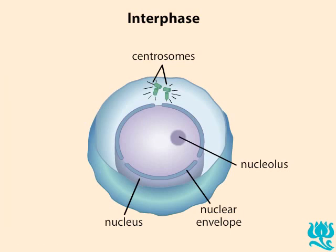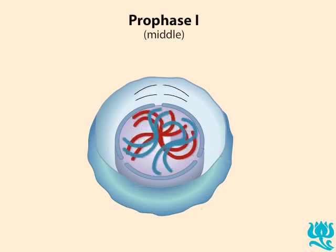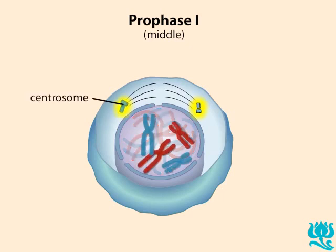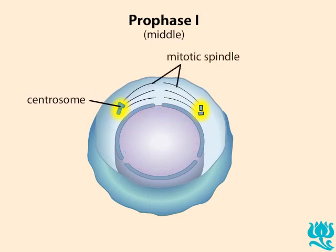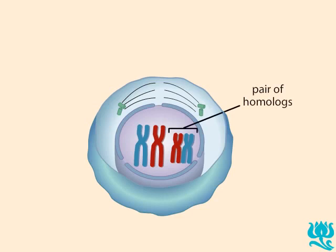Meiosis consists of two cell divisions, meiosis 1 and 2. As the diploid cell enters the first phase of meiosis 1, called prophase 1, its chromatin condenses into discrete chromosomes. The cell has two centrosomes, which form the mitotic spindle as the centrosomes migrate to opposite poles of the cell. This diploid cell contains homologous chromosomes, which pair up later in prophase 1. One chromosome in each pair is maternally derived, indicated by blue, and one is paternally derived, indicated by red.